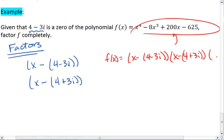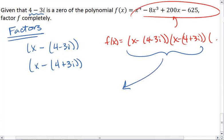Let's go ahead and multiply these two complex factors together. So we're going to take x minus 4 plus 3i, I distributed the negative, times x minus 4 minus 3i.